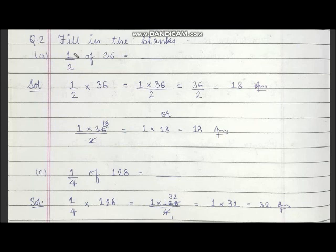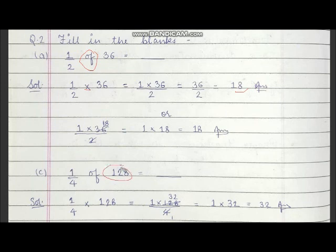Now, if questions like '1 upon 2 of 36' are given, how will we find the answer? Here 'of' means multiplication. So we will write 1 upon 2 multiplied by 36, in which we multiply the numerators and divide by the denominator. We can directly divide 36 by 2, and 36 in the table of 2 comes 18 times, so the answer is 18. We have to divide the numerator and the denominator — so here 36 is divided by 2, and 128 is divided by 4, and we will get the answers.